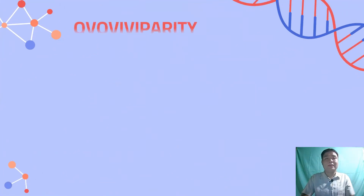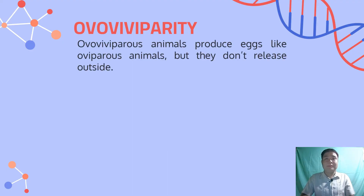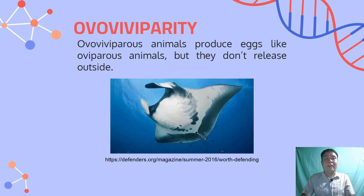The second type of internal fertilization is ovoviviparity. Ovoviviparous animals produce eggs like oviparous animals, but they don't release them outside. Ovoviviparous animals grow inside the pregnant womb while also being inside an egg, sharing common characteristics with viviparous and oviparous animals. The egg can hatch inside the womb or be expelled at birth. An example of an ovoviviparous animal is a manta ray, as seen in the picture.